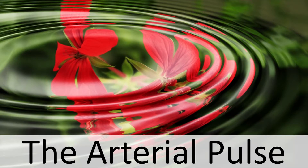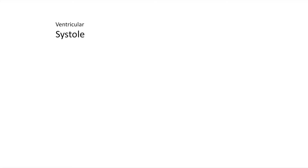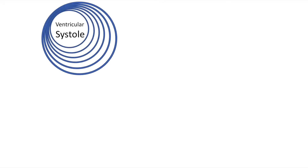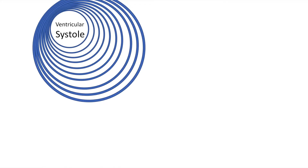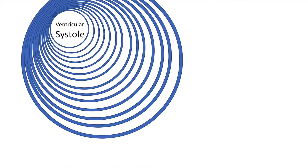Hello everyone, I am Dr. Prashanth and in this presentation we will be talking about the arterial pulse. The arterial pulse is a wave that is produced by cardiac systole traversing in the peripheral direction in the arterial tree at a rate faster than the column of blood. Here we see at the onset of ventricular systole a wave being produced in the arteries which is transmitted in the arteries.